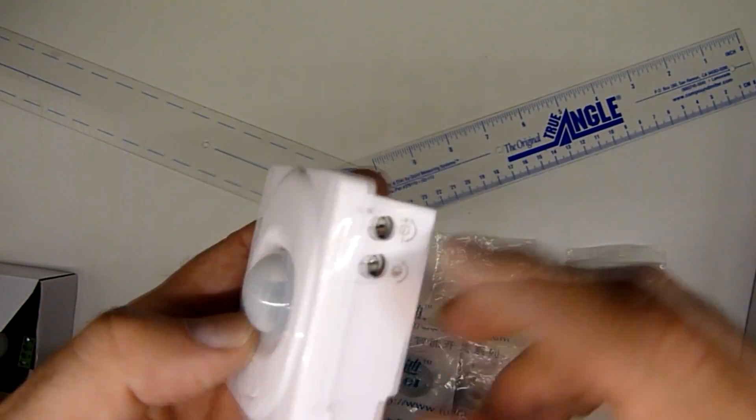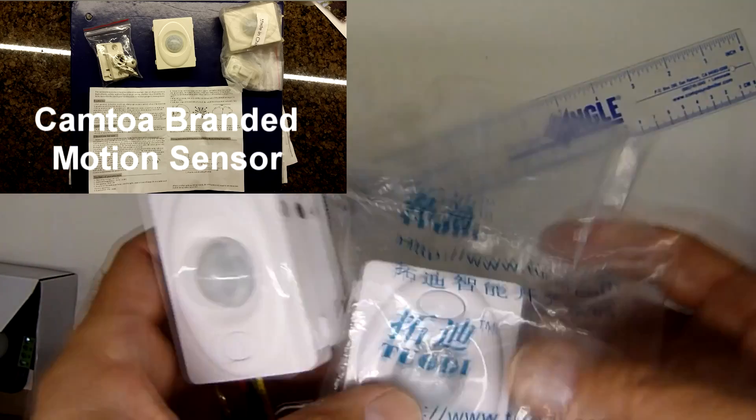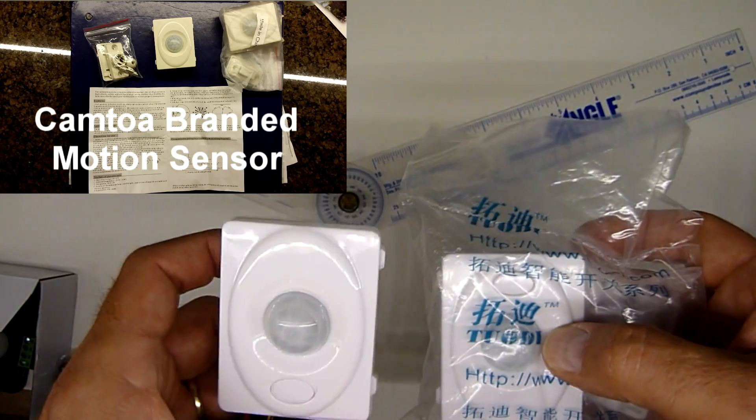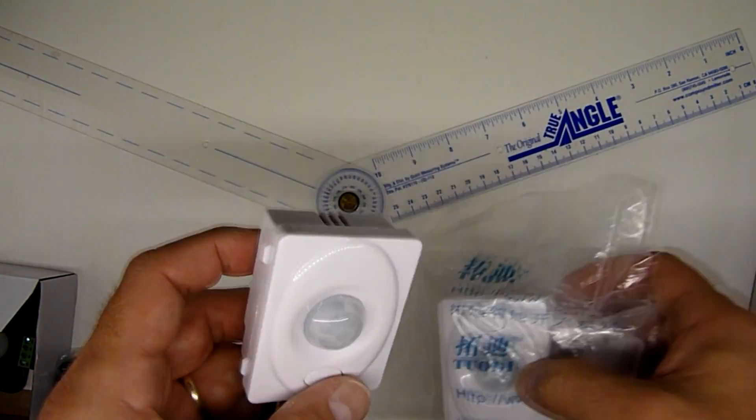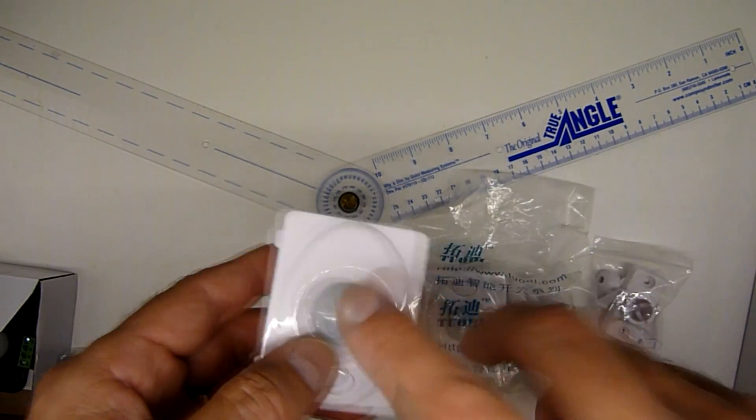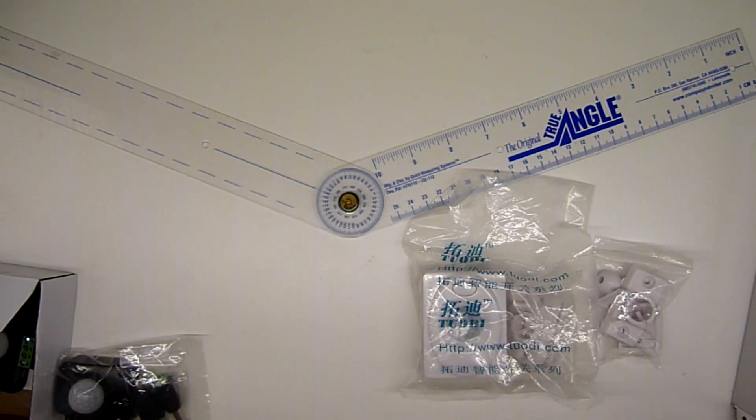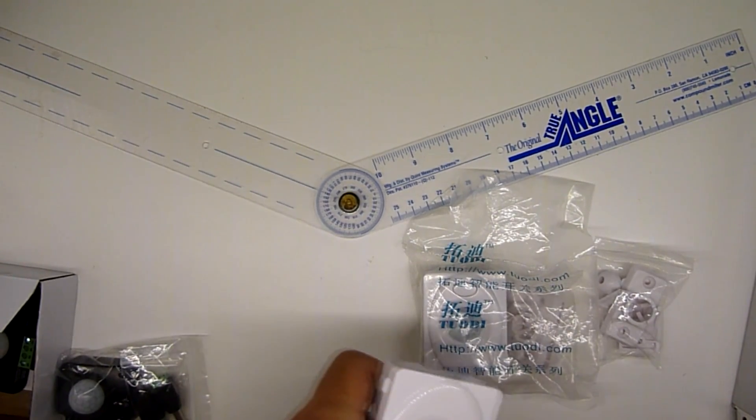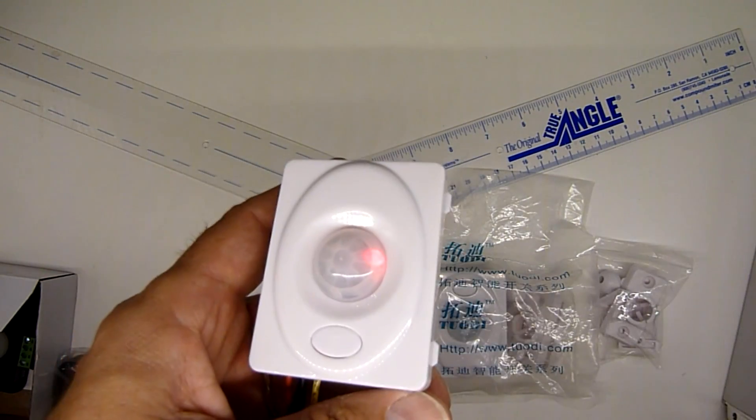One difference between this particular unit and the other one that I purchased domestically called Camto, I also purchased that internationally. This one has the illumination in the center, so when you plug it in and it's activated, it has a little red light that comes on to tell you that it's activated.